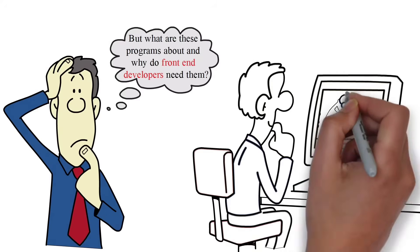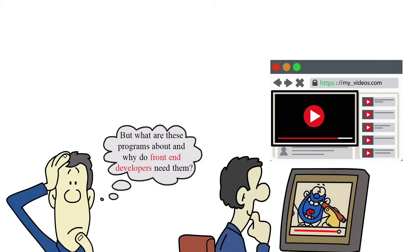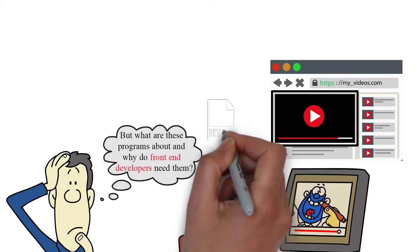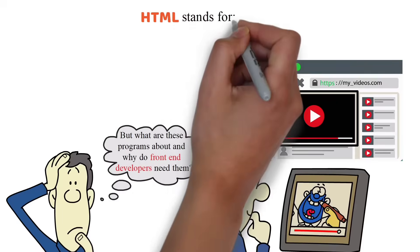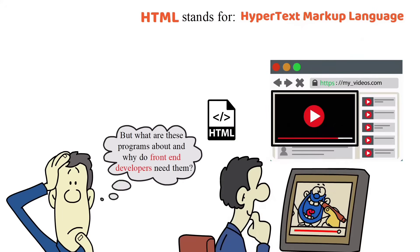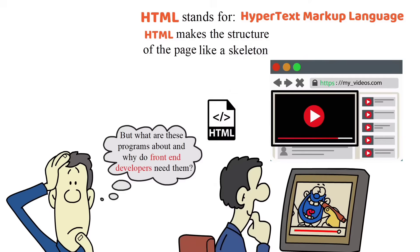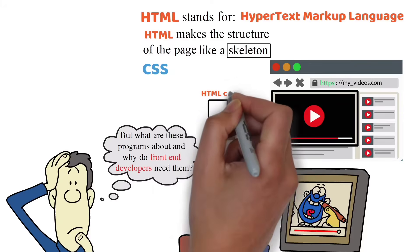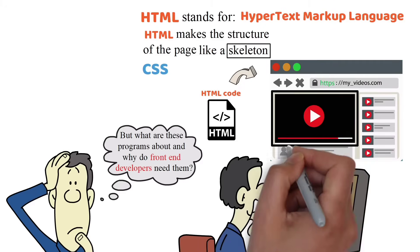Imagine the YouTube screen you are looking at right now. All the containers, like the rectangular container in which this video is playing, is a product of HTML code. HTML stands for Hypertext Markup Language. HTML makes the structure of the page like a skeleton — a skeleton that will be styled with CSS. For example, the HTML code is telling your computer to display the video in this container.